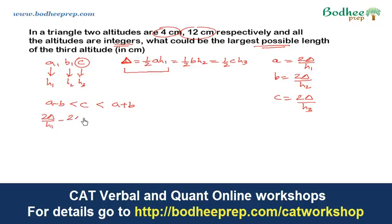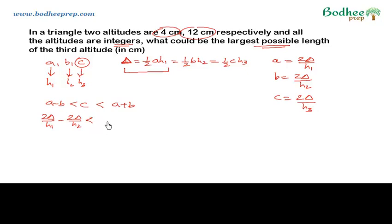Let me substitute the values of a, b, c in this relation. So 2∆/h1 minus 2∆/h2 should be less than c, and c should be less than 2∆/h1 plus 2∆/h2.